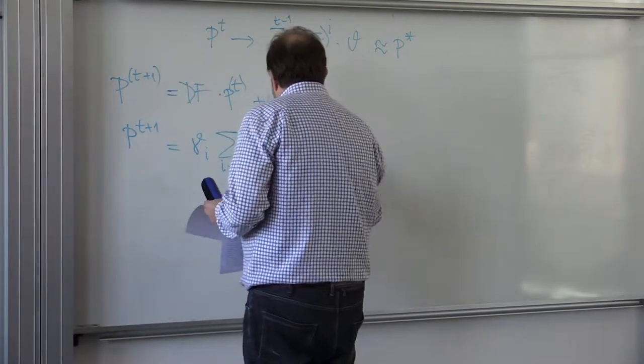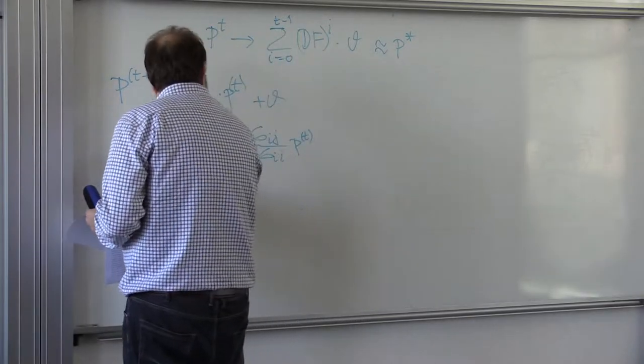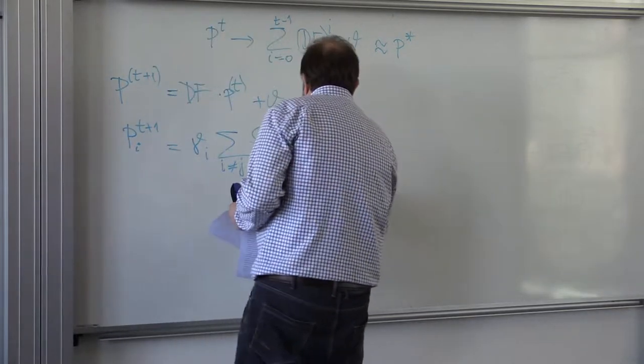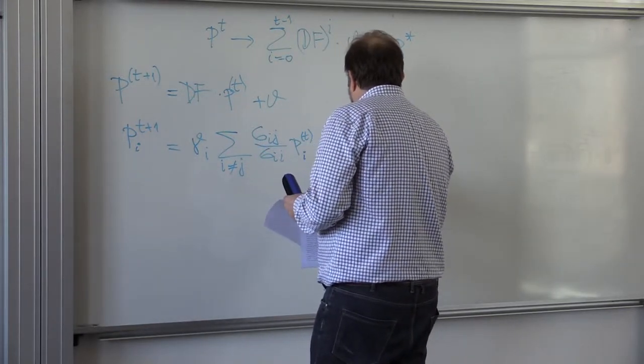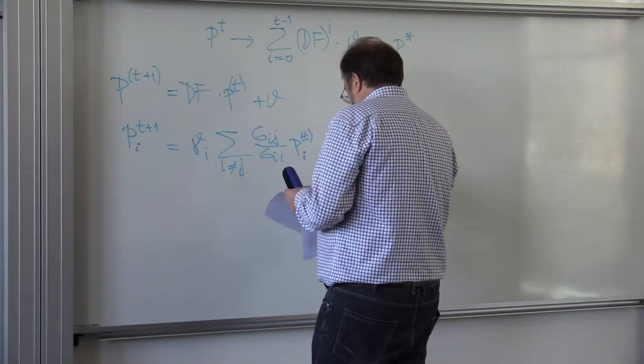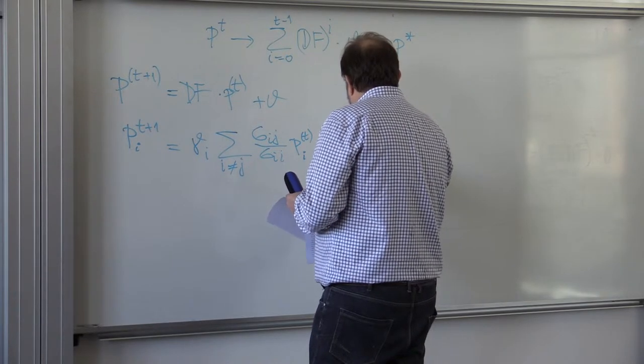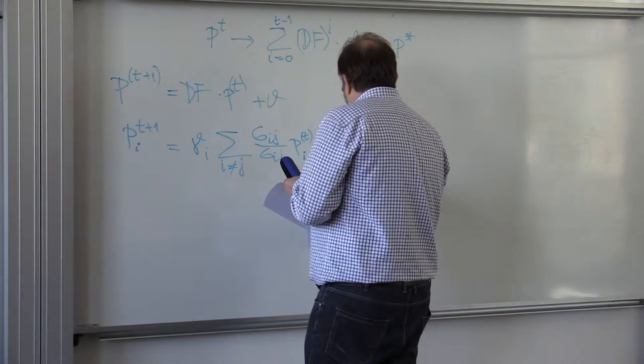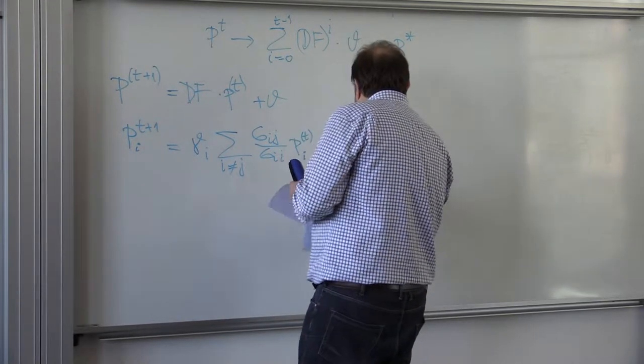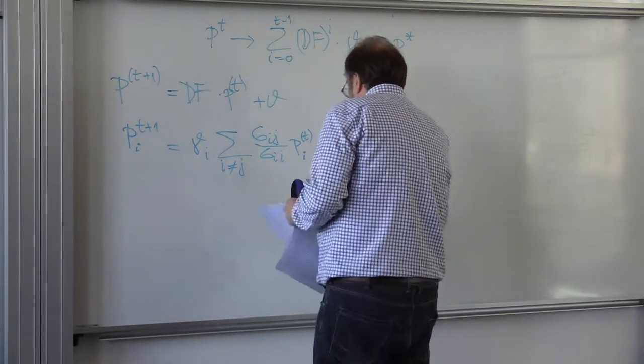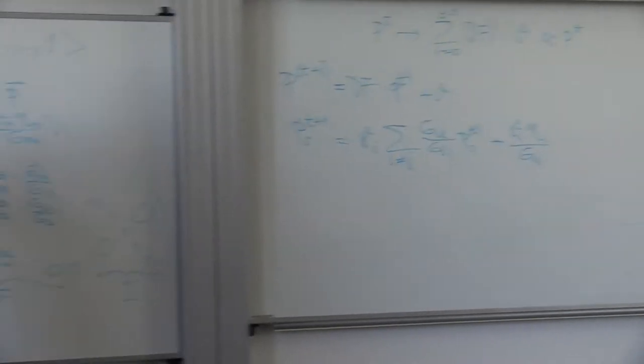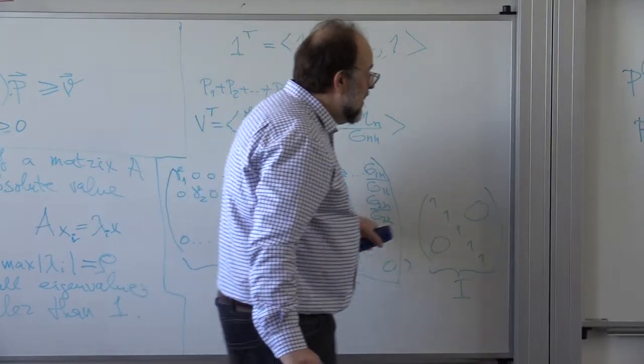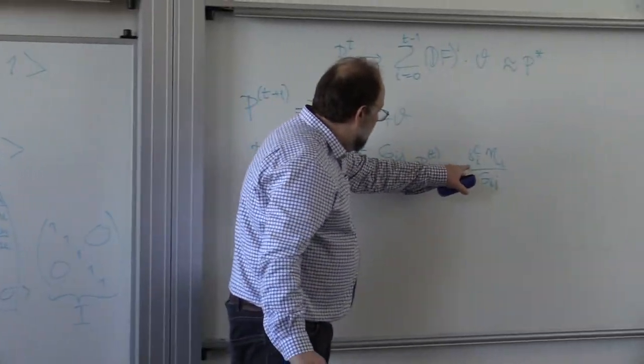Right? If I look at each coordinate, so let me look at I coordinate, right, plus gamma I times eta I divided by Gii. When I multiply this times PT, and multiply by this, I get precisely this.